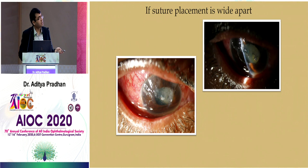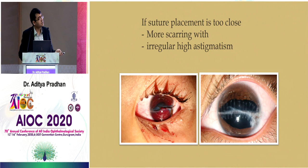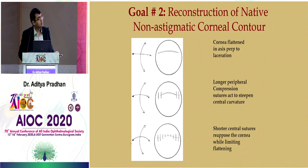If sutures are placed too wide apart, the anterior chamber becomes shallow due to continuous leak. Conversely, if sutures run from limbus to limbus but are placed too close together, the compression zones overlap, causing irregular astigmatism and more scarring in the visual axis.